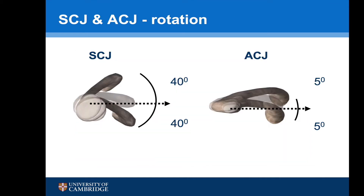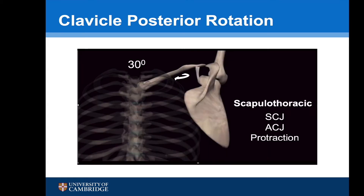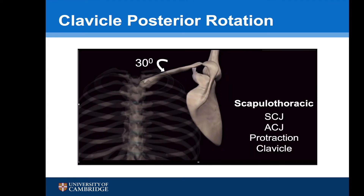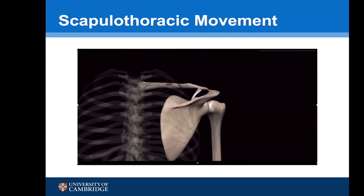The SCJ also allows 40 degrees of anterior and posterior rotation and the AC joint 5 degrees. Posterior rotation of the clavicle allows the scapula to rotate further, obtaining maximum elevation of the shoulder.